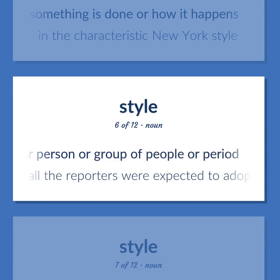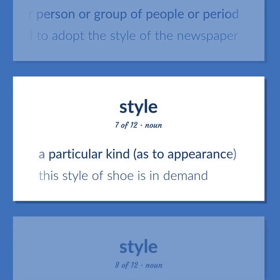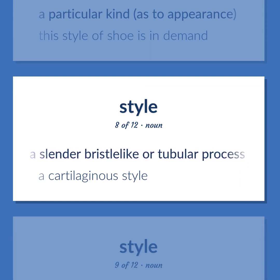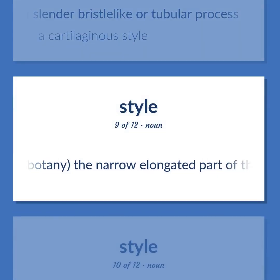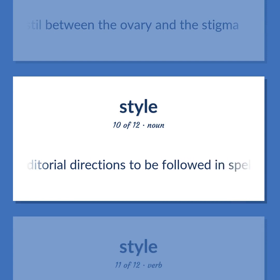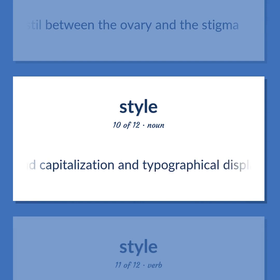Style example: All the reporters were expected to adopt the style of the newspaper. Also: a particular kind as to appearance. Example: This style of shoe is in demand. Also: a slender bristle-like or tubular process. Example: A cartilaginous style. Botany: the narrow elongated part of the pistil between the ovary and the stigma.